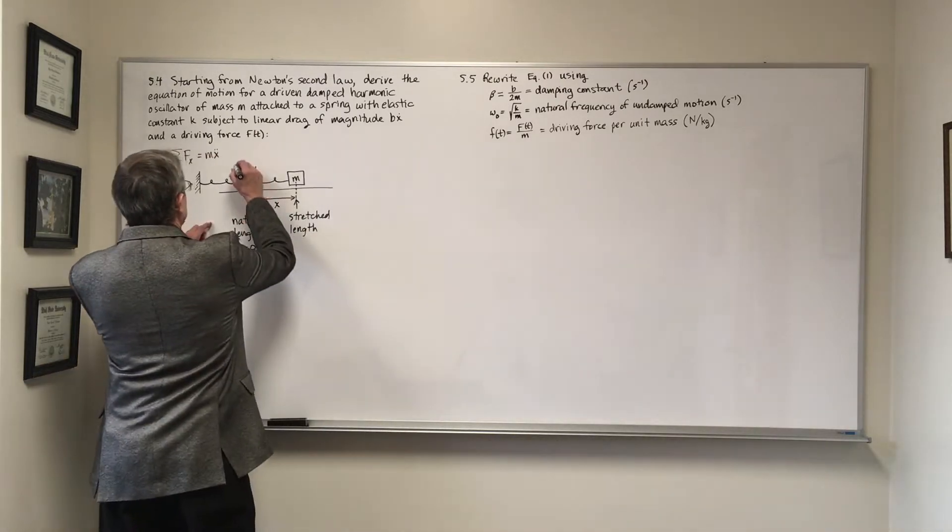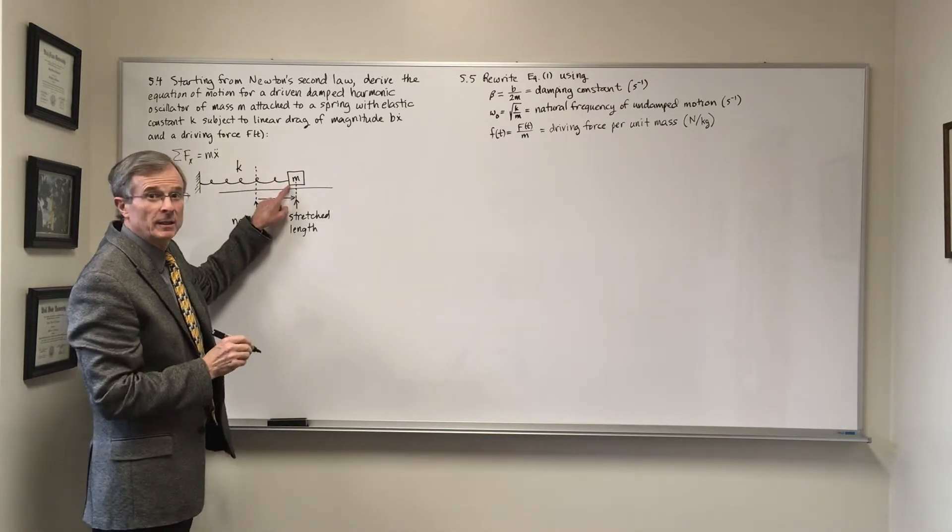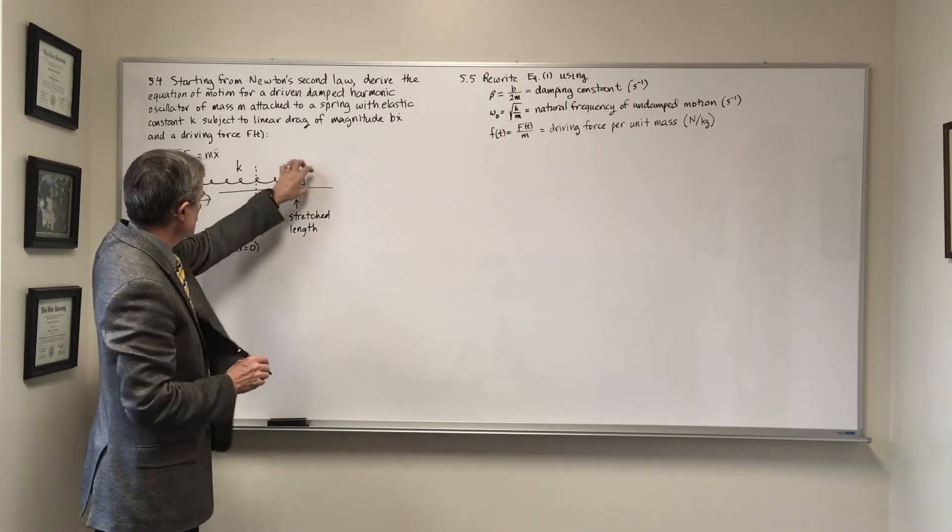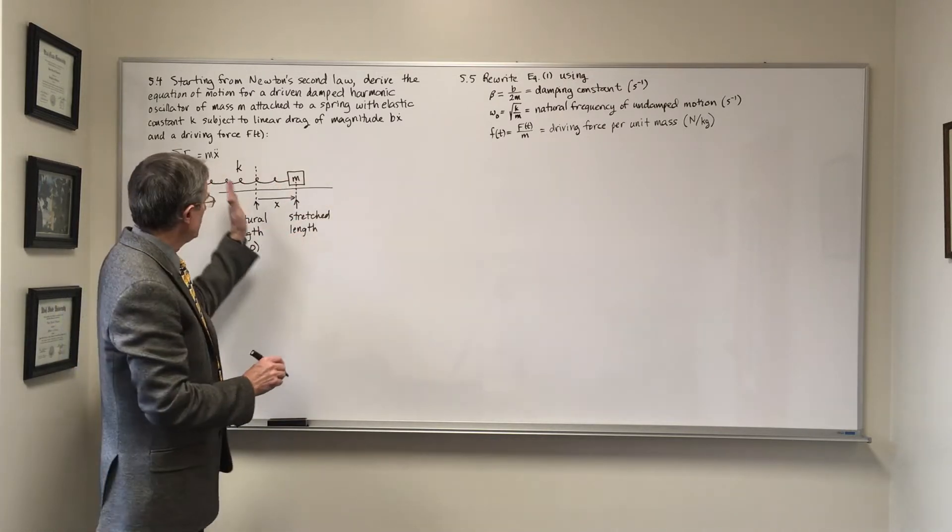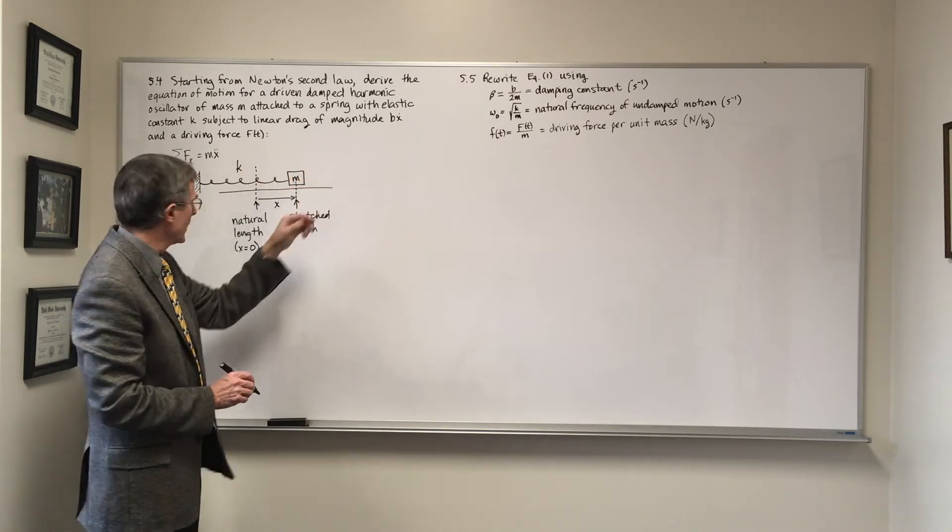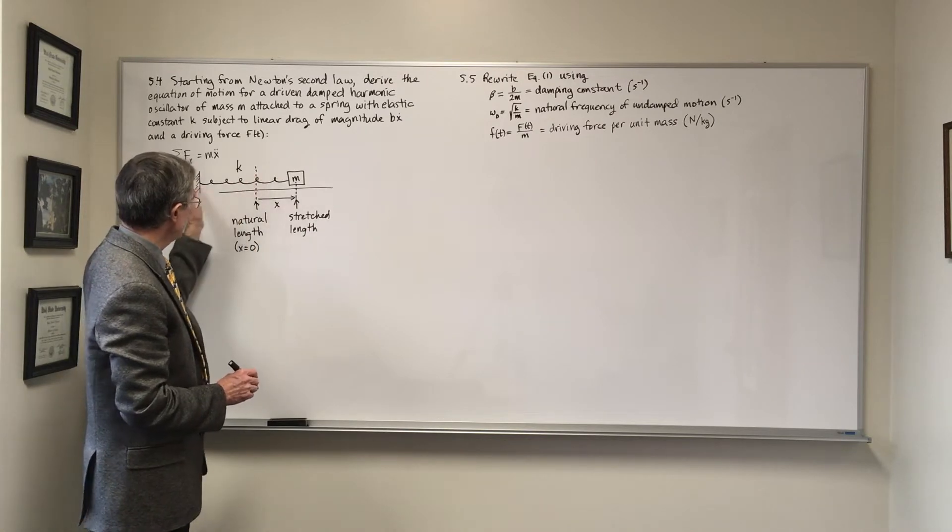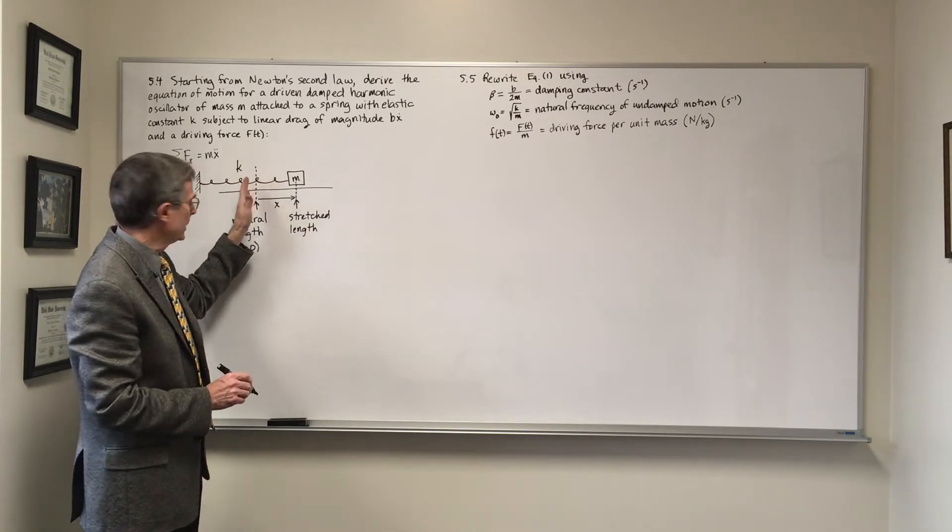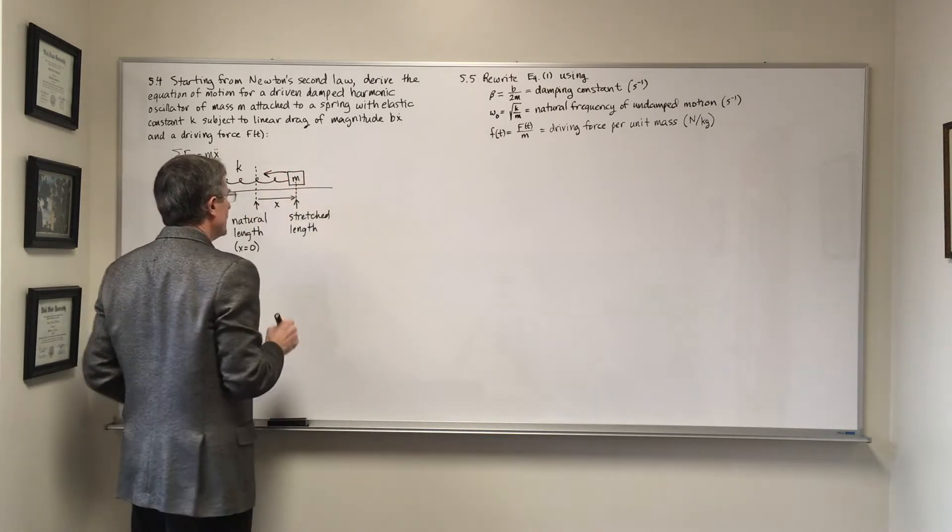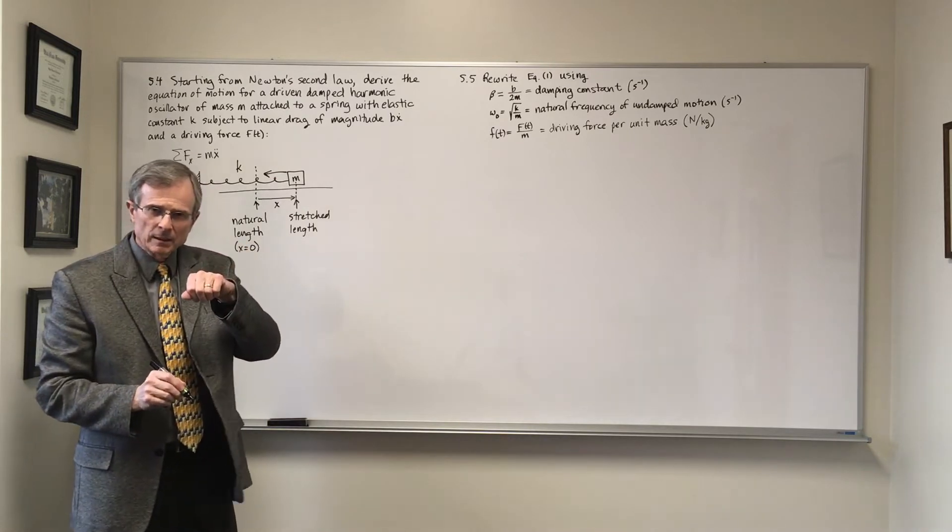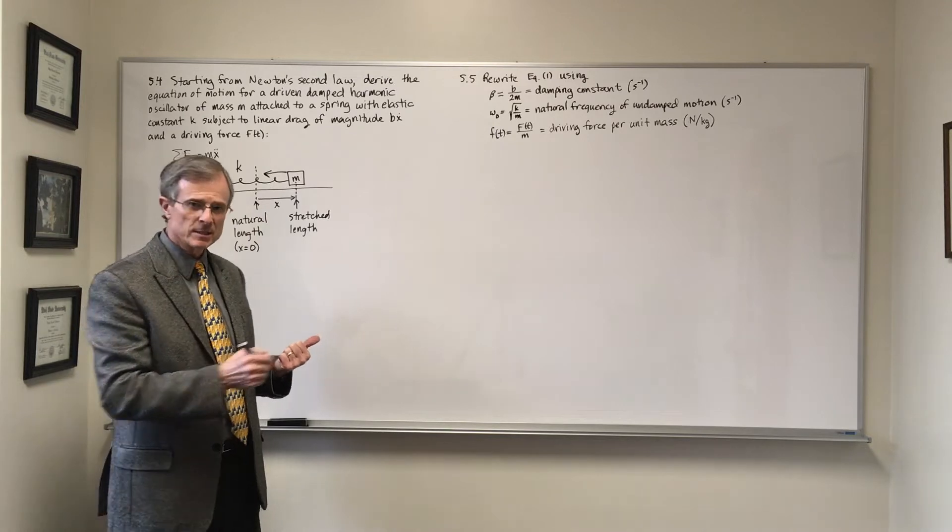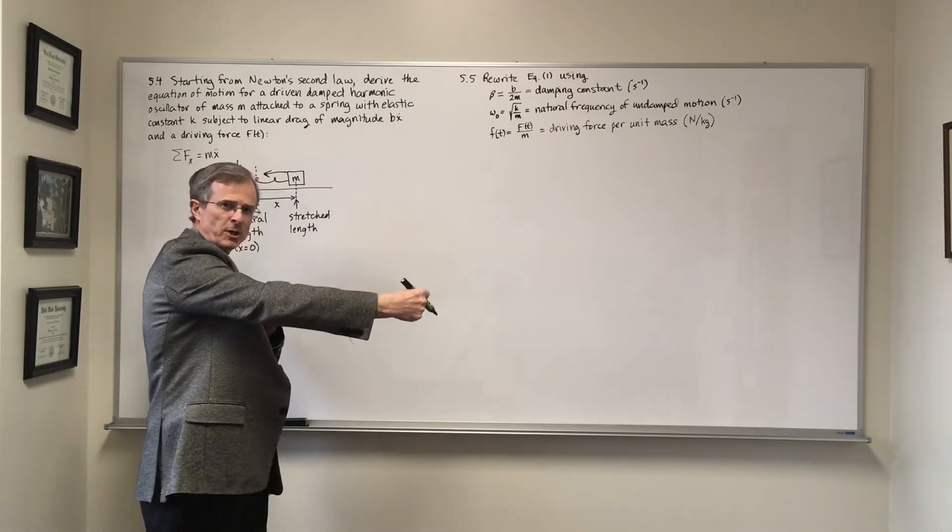So I've drawn a picture of this. This is my spring with elastic constant K and this is my mass M, and I've stretched that spring beyond its natural length. If I had been pulling it out this way, the end of it would be right here where this dotted line is, but I've stretched it out. That means there's going to be a force that the spring is going to exert on the mass. Which direction does the spring exert on the mass? It pulls it to the left because the spring is stretched.